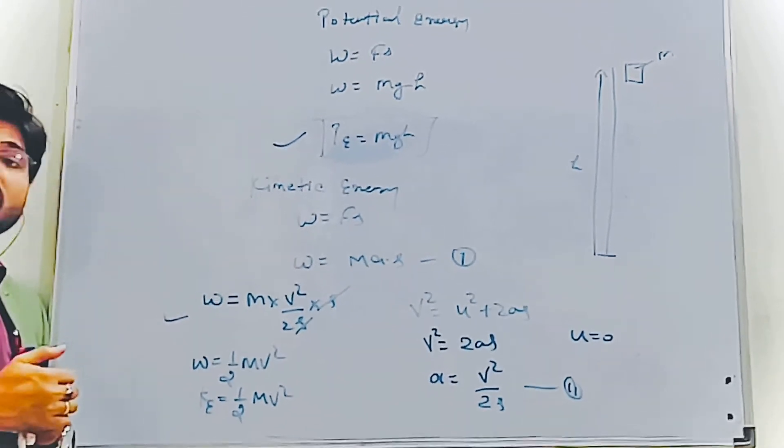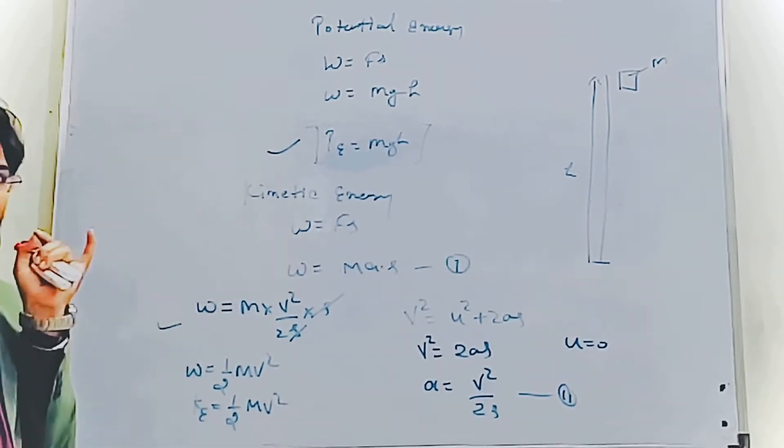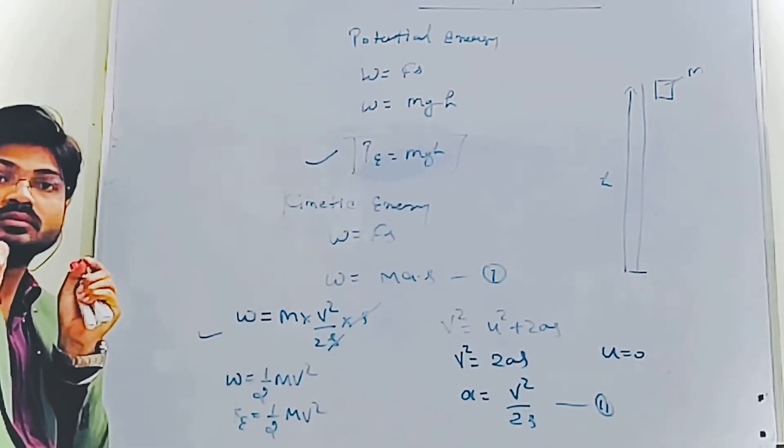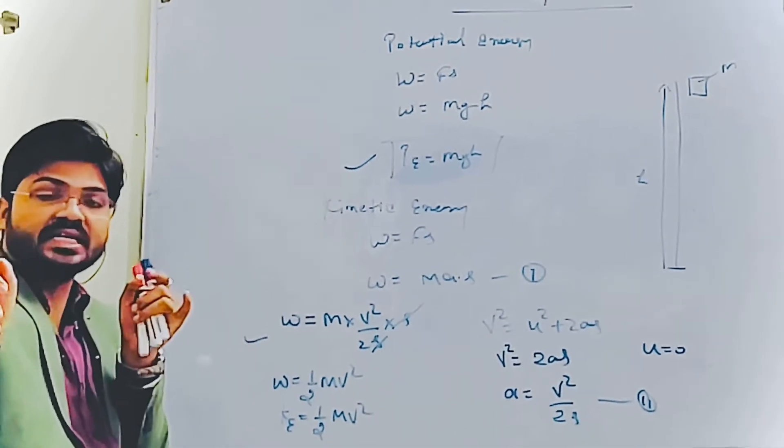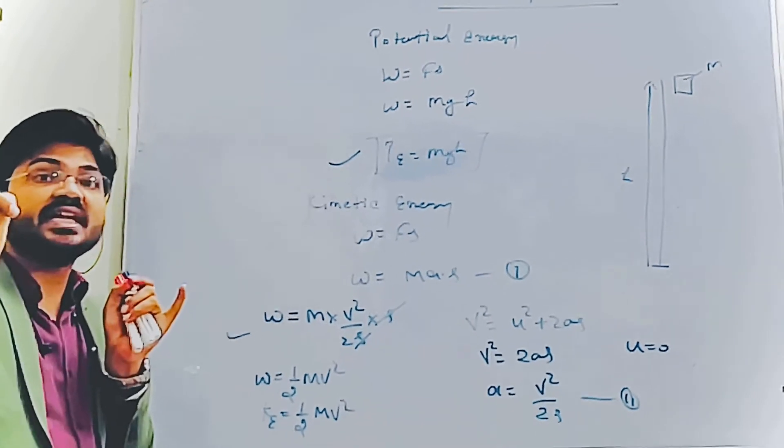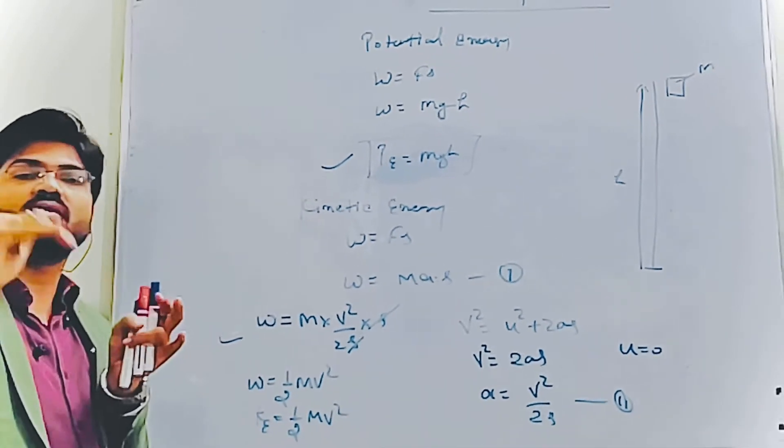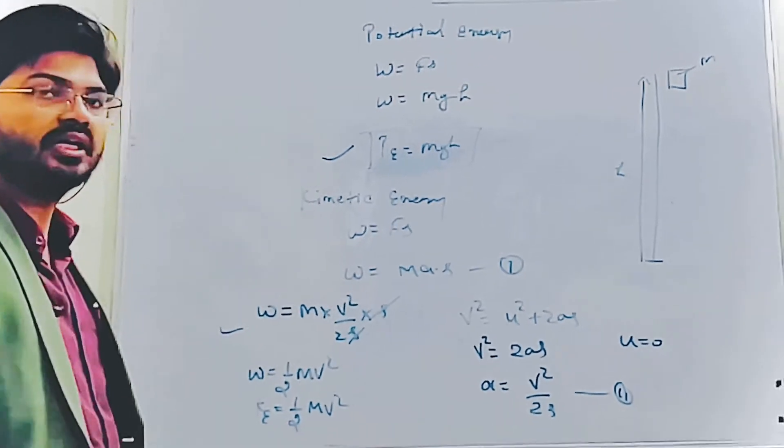For example, when we have a bow and arrow, when we pull the arrow back and hold that position, that's potential energy. But as we release it, the potential energy converts into kinetic energy.